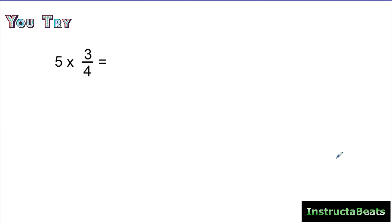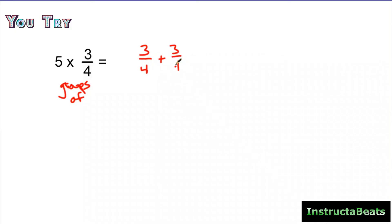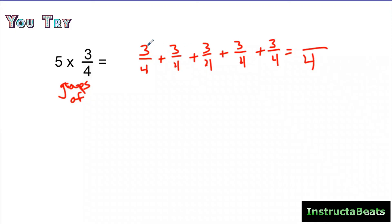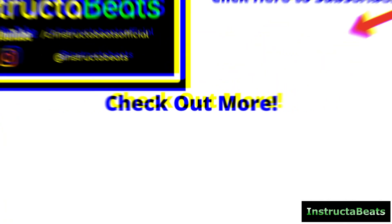Here is your 'you try' problem. You can choose to solve this using a number line, an area model, or just writing it as an addition equation. Go ahead and pause the video, solve the problem, push play, and let's see how you did. We're reading this as five groups of three-fourths. Three-fourths plus three-fourths plus three-fourths is three groups; one more makes four groups; one more makes five groups. My denominator stays the same, and I have three, six, nine, twelve, fifteen-fourths. Your improper fraction is fifteen-fourths, or you could write that as three wholes and three-fourths.